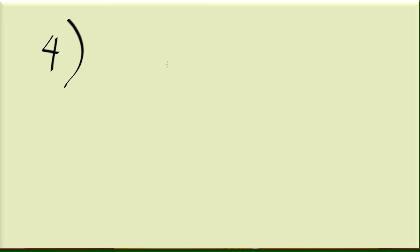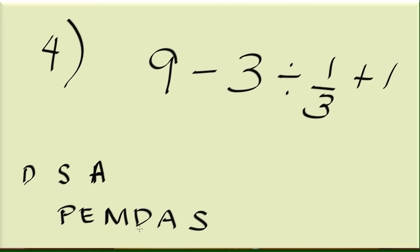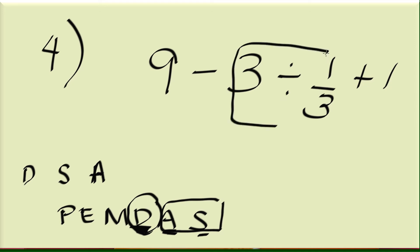Example number 4: how about 9 minus 3 divided by 1 third, plus 1? We have division, subtraction, and addition. In PEMDAS, we have to do division first, then addition and subtraction last. So we have to do 3 divided by 1 third first. In division of fractions, the rule is you change the division to multiplication.